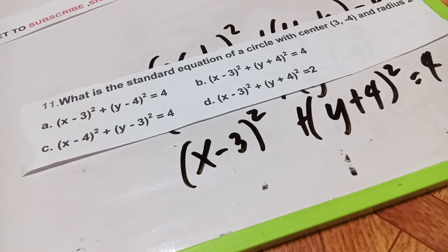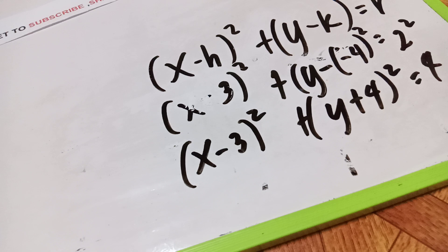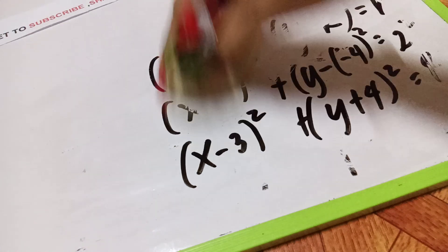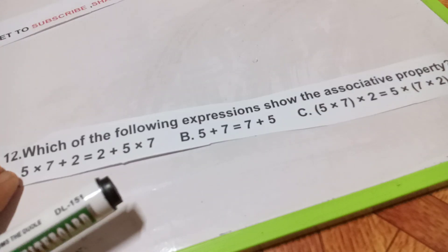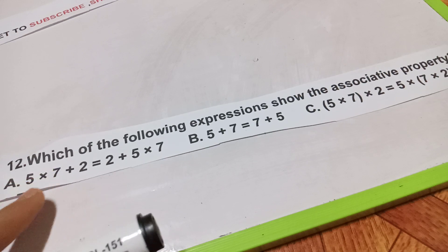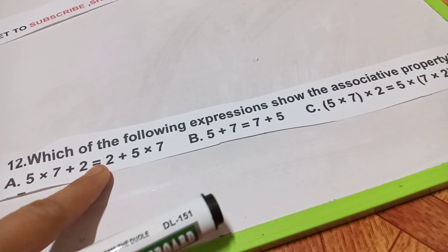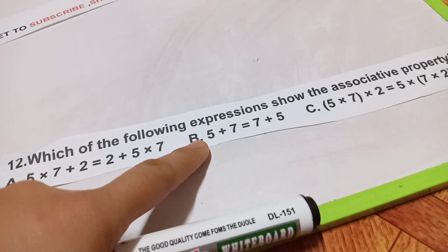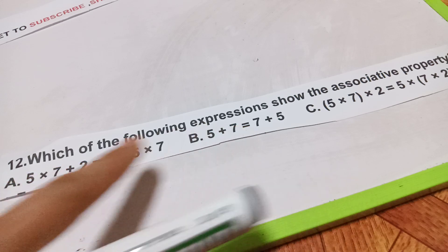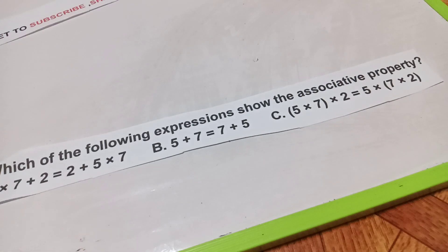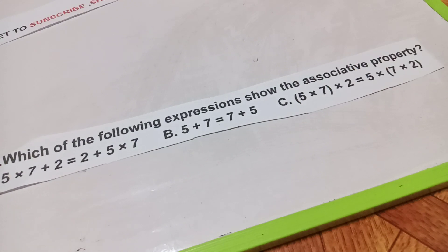Let's have question number 12. Which of the following expressions shows the associative property? (A) 5 times 7 plus 2 equals 2 plus 5 times 7; (B) 5 plus 7 equals 7 plus 5; (C) 5 times 7 quantity times 2 equals 5 times 7 times 2. Which of these is associative?